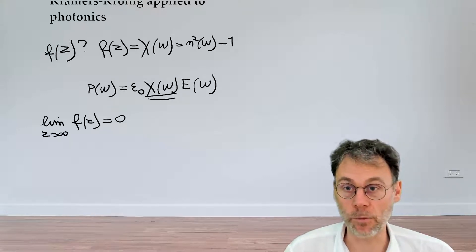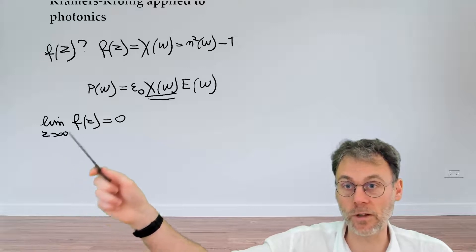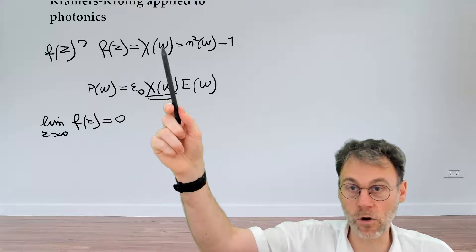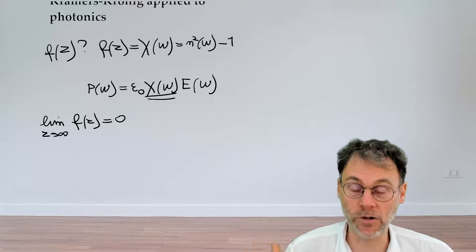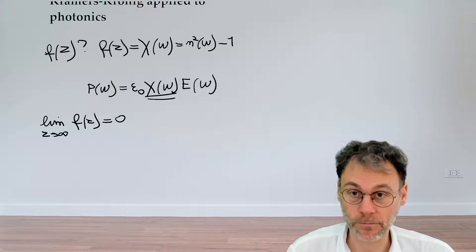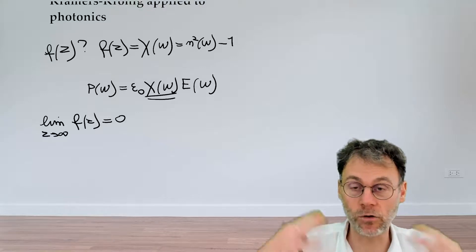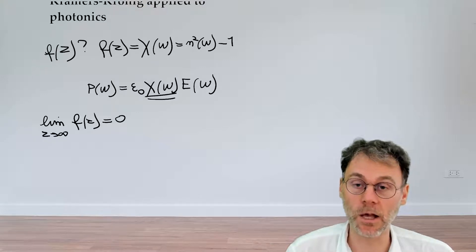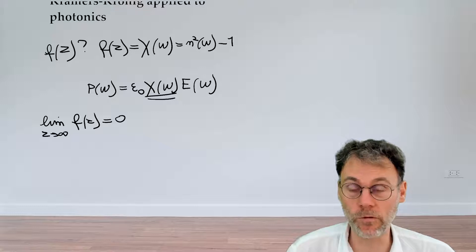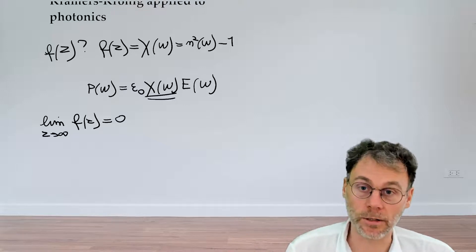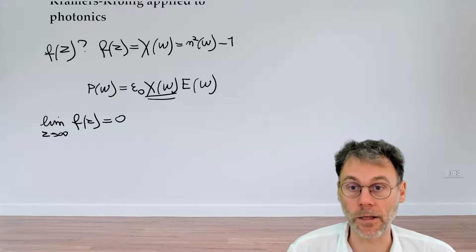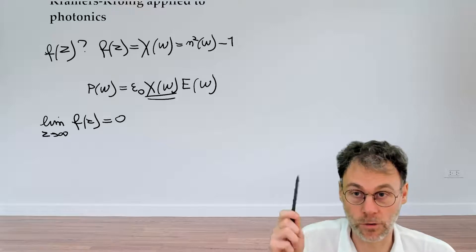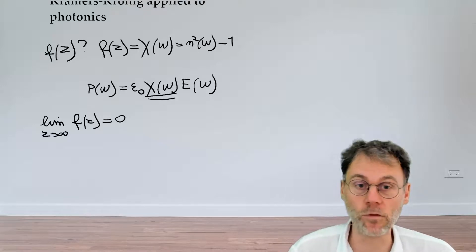Now in our particular case this means z going towards infinity means omega going towards infinity. So what happens with our material for infinitely high frequencies of the exciting electric field? Say you gradually increase the frequency of the electric field, then your electrons will keep moving faster and faster, until at a certain point the field oscillates so rapidly that the electrons can no longer follow and in the limits of infinitely high frequencies the electrons will just stay put and not move at all.